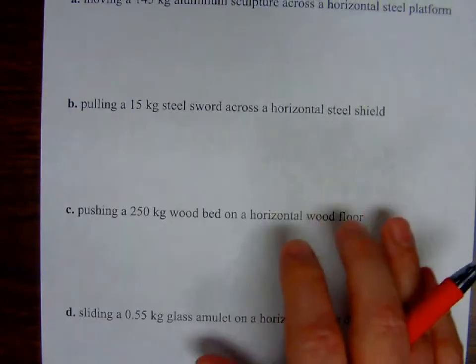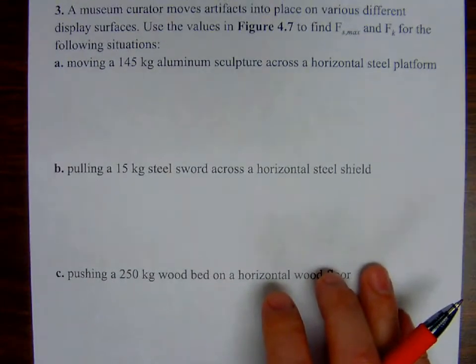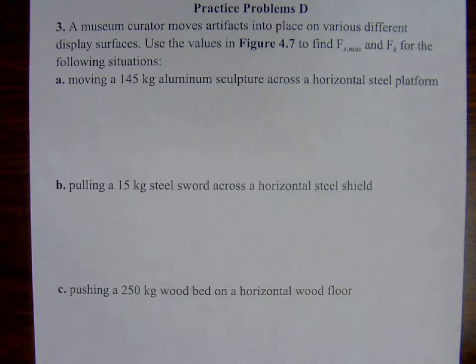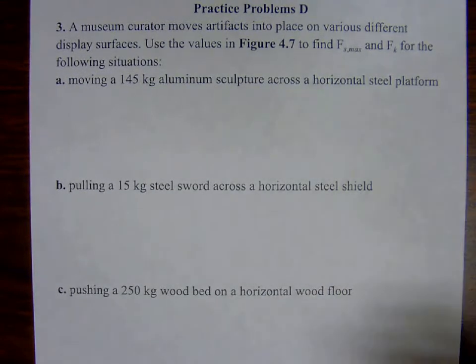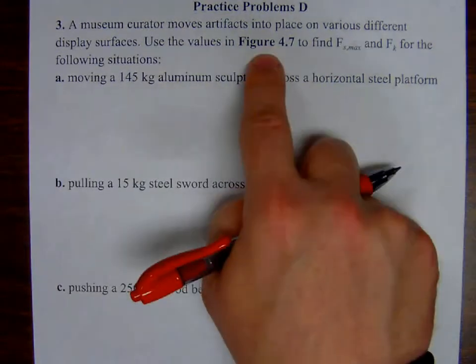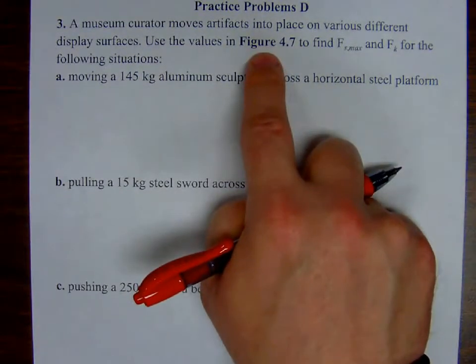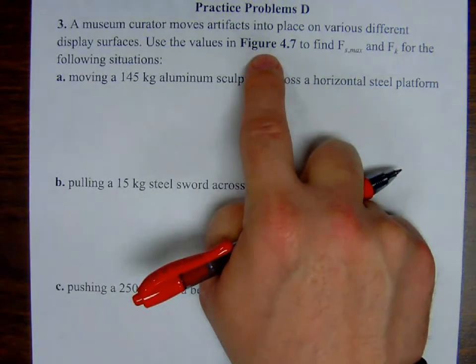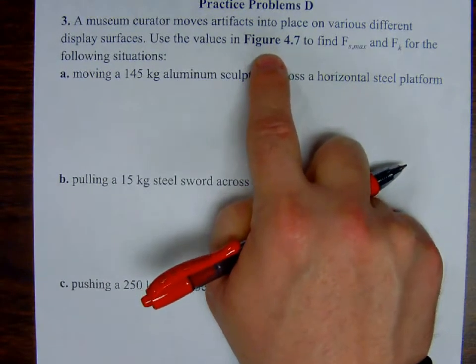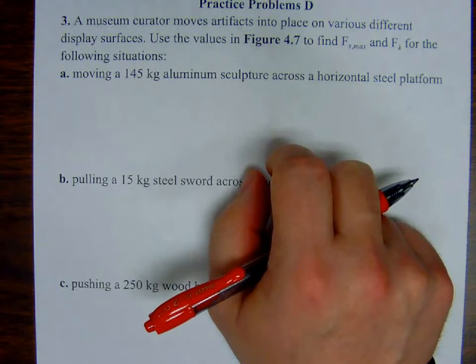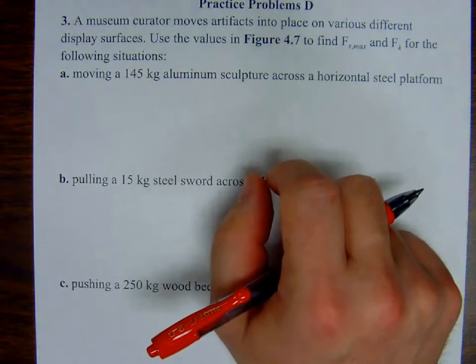So here's the thing, you're not supposed to have memorized these things, but you do need to have your textbook open so that you can just read these values directly off of the table. So again, they're on page, I believe it's 138, figure 4.7 to give you all those coefficients of friction, both kinetic and static.